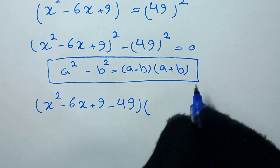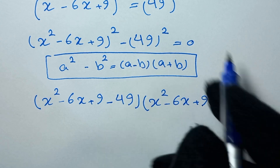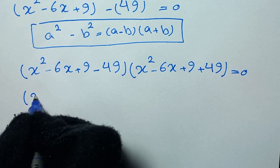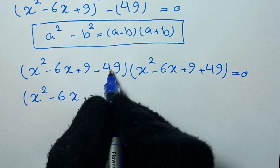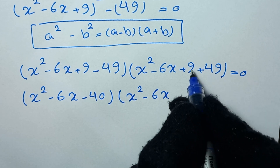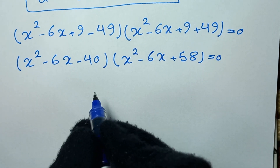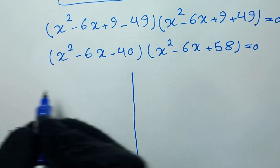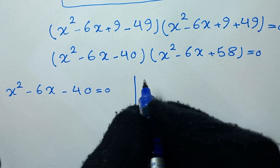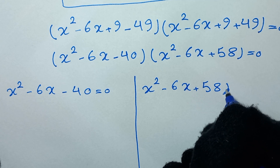...times (x squared minus 6x plus 9 plus 49) equals zero. This gives us two equations: x squared minus 6x minus 40 equals zero, or x squared minus 6x plus 58 equals zero.